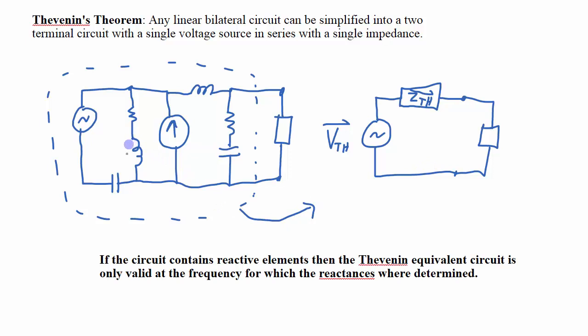One thing to note: even though I drew these elements as resistors, inductors, and capacitors, we really want to know the impedances of each one of those components. The impedance is dependent on the frequency. So the caveat is that if this circuit contains reactive elements, then the Thevenin equivalent circuit is only valid at the frequency for which the reactances or the impedances were determined.